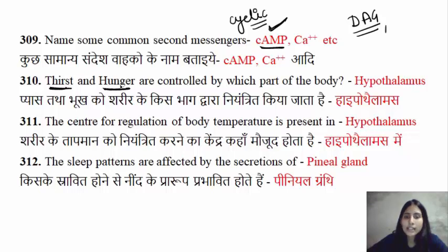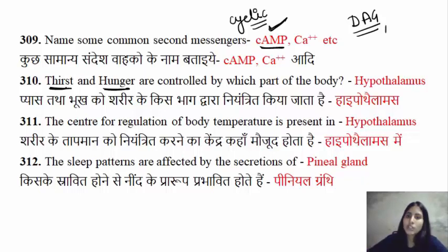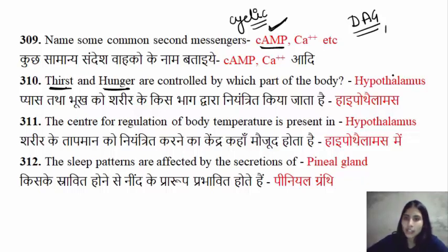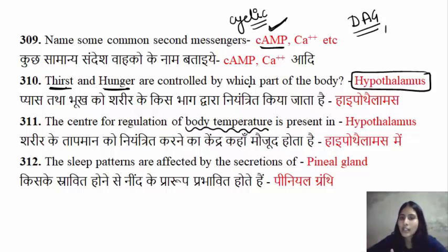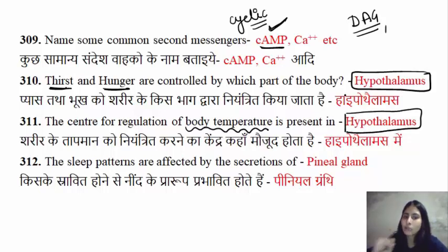Let's tell you that the thirst and hunger center — these sensations are generated in your body. The hypothalamus part of your brain contains the thirst center as well as your hunger center. The center for regulation of body temperature is also present in the hypothalamus.